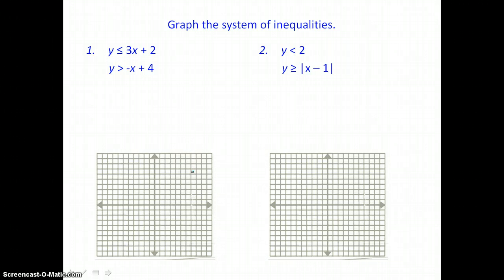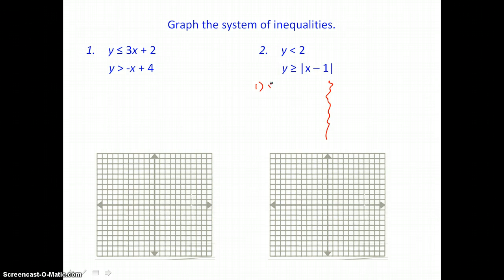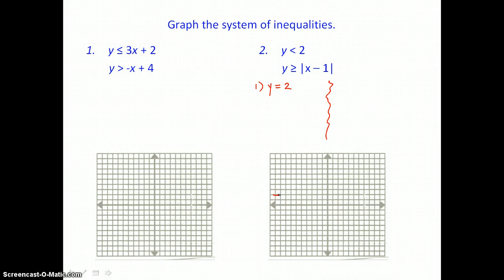Let's start with example two. When we graph inequalities in the coordinate plane, it's two steps. The first step is to graph the boundary — we replace the inequality with an equal sign. For this first inequality, we're graphing the boundary y equals 2, which is a horizontal line that crosses the y-axis at 2. I want to graph it broken, since equals is not part of the inequality.